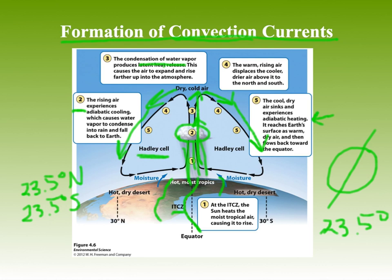As the air sinks, it experiences adiabatic heating — when air comes closer to the Earth, it experiences more pressure and therefore decreases in volume, causing it to heat up. This is called adiabatic heating. When it reaches the surface of the Earth, it's going to be warm and dry, and then it flows back to the equator.